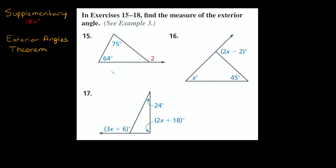That was the first method. Now the second method uses the exterior angles theorem, which says that when you add up the two non-adjacent interior angles, they add up to the exterior angle. This works as long as the two angles given are not next to — not supplementary with — the exterior angle you're trying to find. As you can see, the two angles here are not touching the exterior angle, so we can use this theorem.